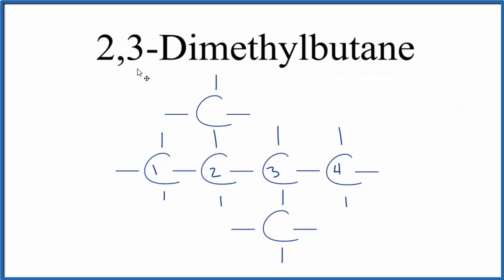So this is the structure for 2,3-dimethylbutane. We have our butane, four carbons in a row, and on the second and third carbons, we have methyl groups right here and here. We can put them both on top, but it's a little crowded, so I'll just put it down here.